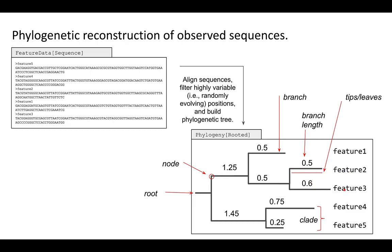The vertical line has no meaning other than to show the grouping — there is no distance associated with the vertical line, only the horizontal lines. You have nodes, and then you have the root of the tree. We'll discuss the importance of roots right now.